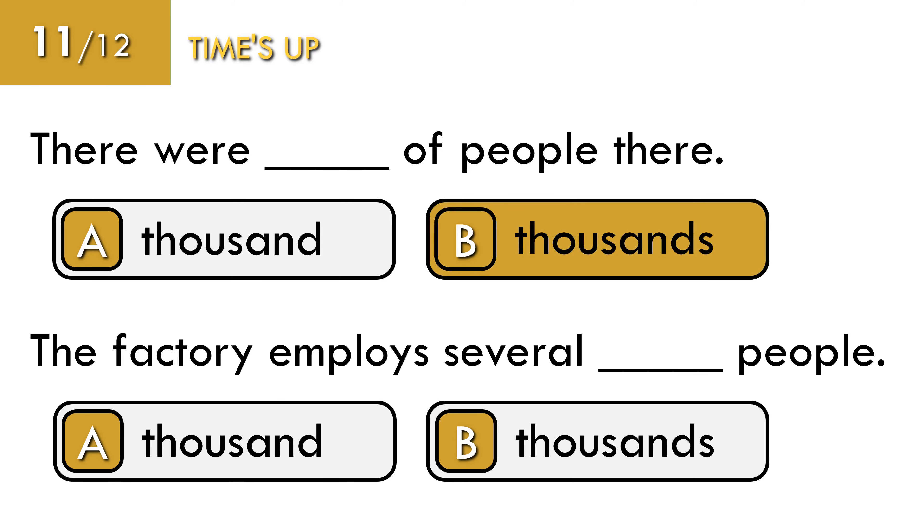For the first sentence, the correct answer is thousands. For the second sentence, the correct answer is thousand. There were thousands of people there. The factory employs several thousand people.